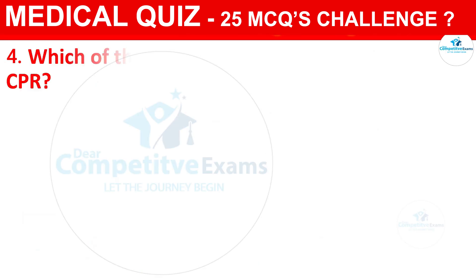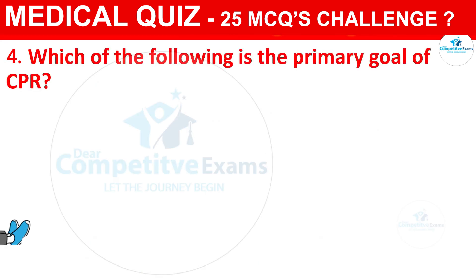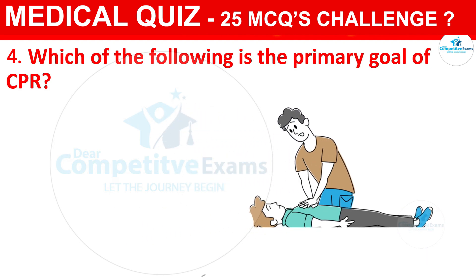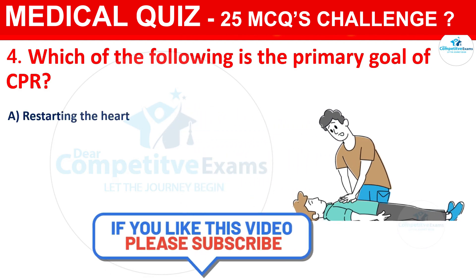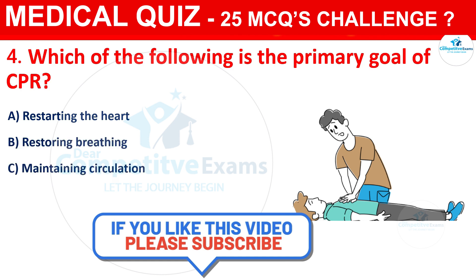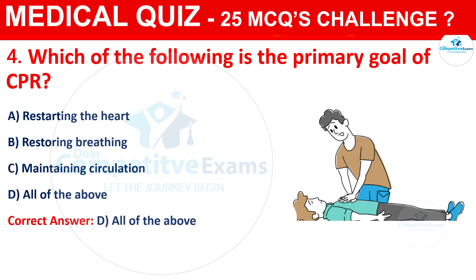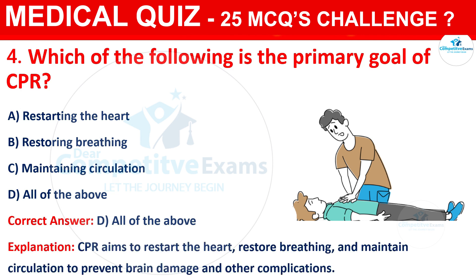Question 4: Which of the following is the primary goal of CPR? Your options are Restarting the heart, Restoring breathing, Maintaining circulation, or All of the above. The correct answer is D — all of the above. CPR aims to restart the heart, restore breathing, and maintain circulation to prevent brain damage and other complications.